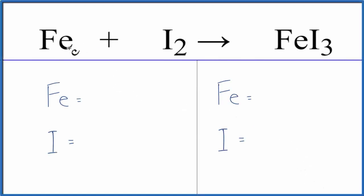In this video, we'll balance the equation for iron plus iodine yields iron 3 iodide. Let's count the atoms up on both sides of the equation. We have one iron and then two iodine atoms.